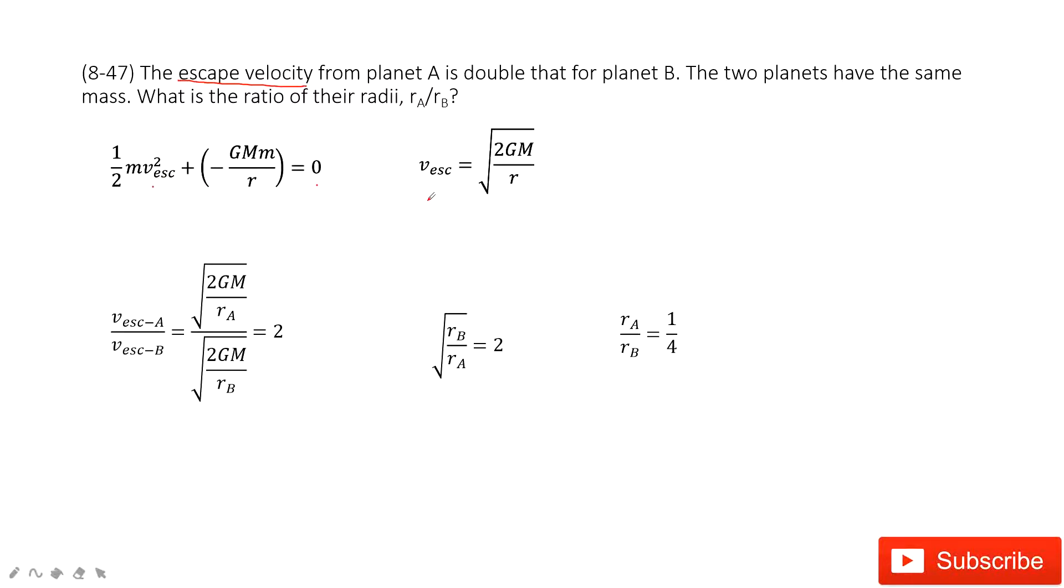So in this way, we can solve the escape velocity for the planet. The capital M is the Earth, right? And then we can see it says the escape velocity for A is double for B. So we do this ratio: escape velocity for A divided by escape velocity for B equals two.